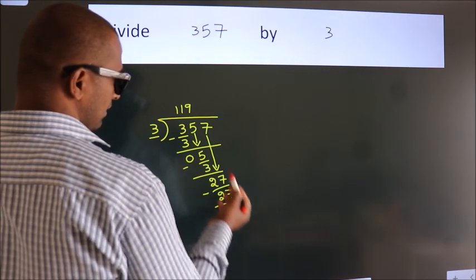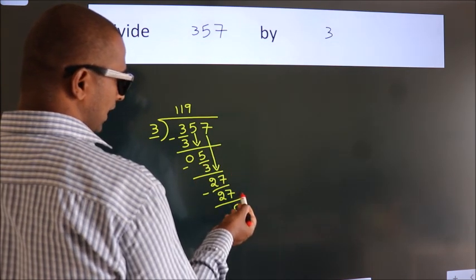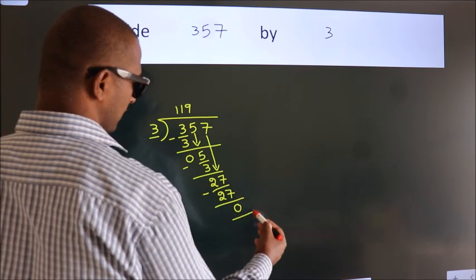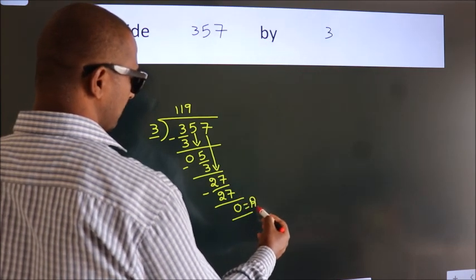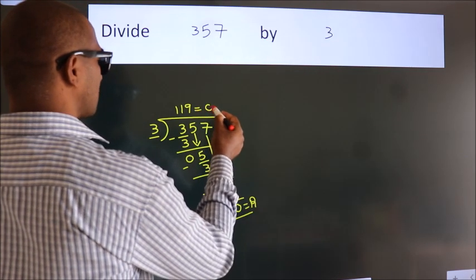After this, no more numbers to bring it down. So, we stop here. This is our remainder. This is our quotient.